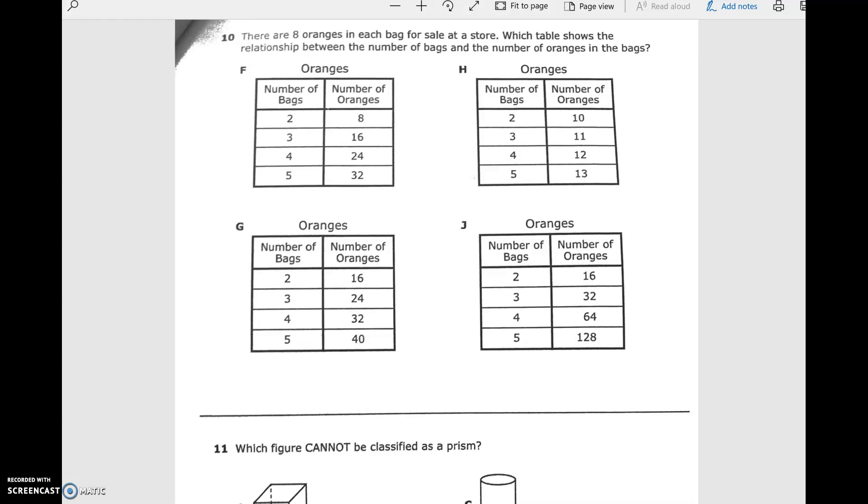There are 8 oranges in a bag for sale at the store. 8 oranges in each bag. Which table shows the relationship between the number of bags and the number of oranges? This is like, basically, the number of bags times 8 should be the number of oranges. So in 2 bags, if there's 8 in each, that would be 8 plus 8, which is 16. So we're looking for 2, 16. So not F. Not H.